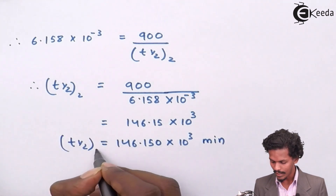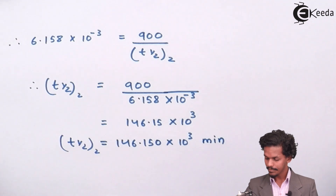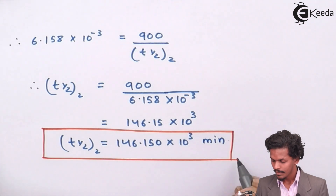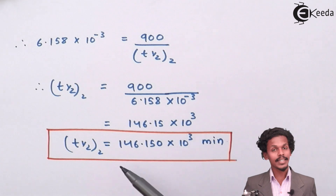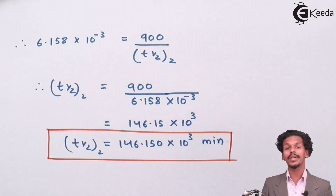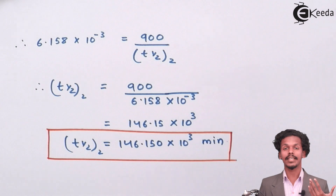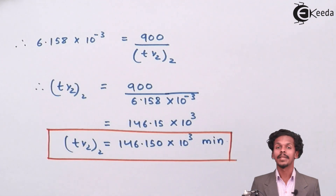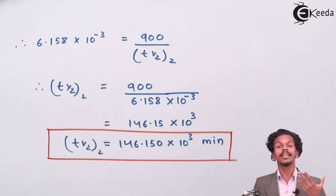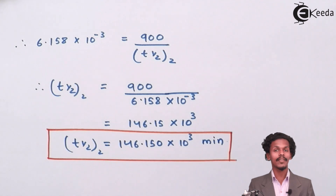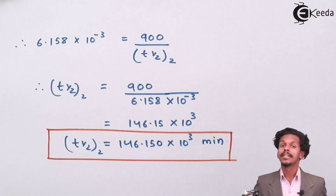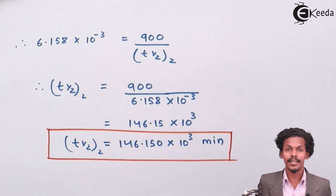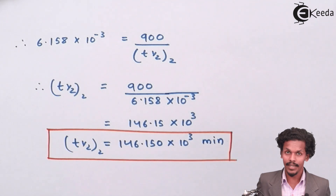This is the t-half we have calculated. We calculated the value of the rate constants K2 divided by K1 based on Arrhenius theory, in which the activation energy was provided, and based on that we calculated t-half as well. Thank you, friends, for watching this video. I hope you liked it and understood how to calculate this kind of numerical. Please don't forget to subscribe. Thank you so much.